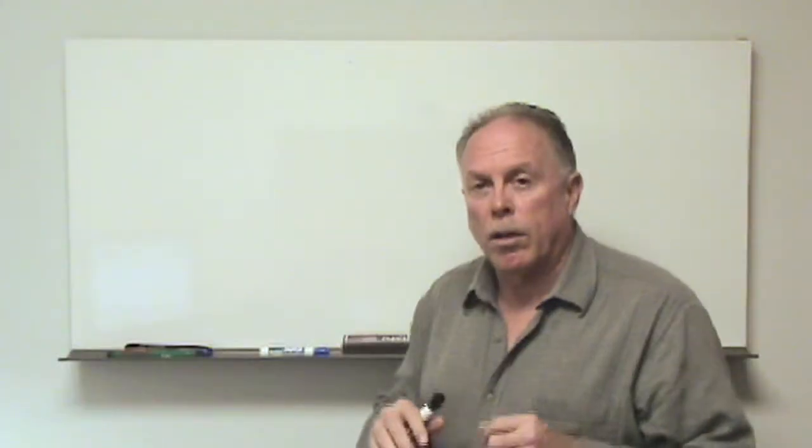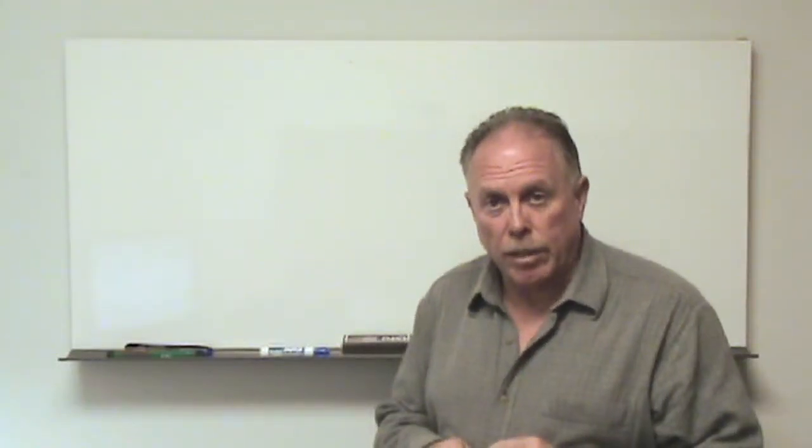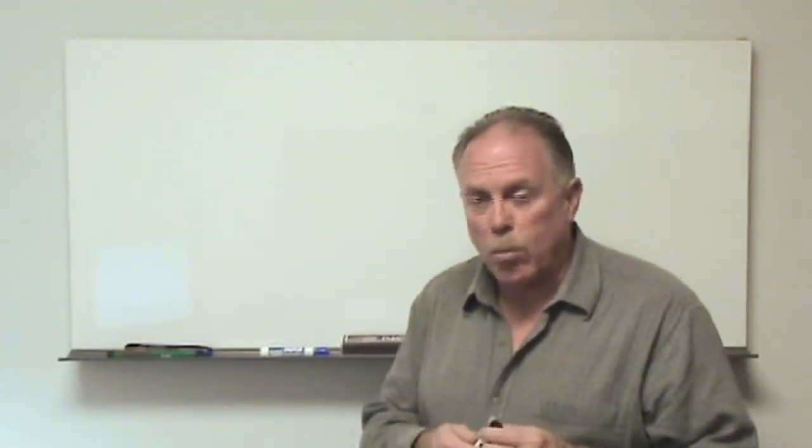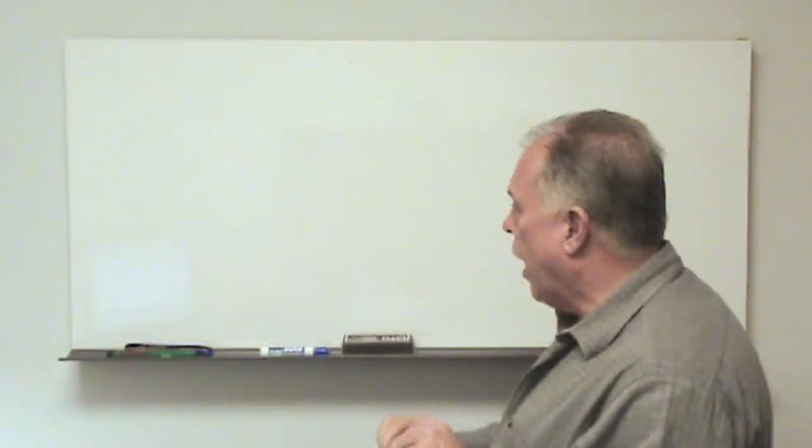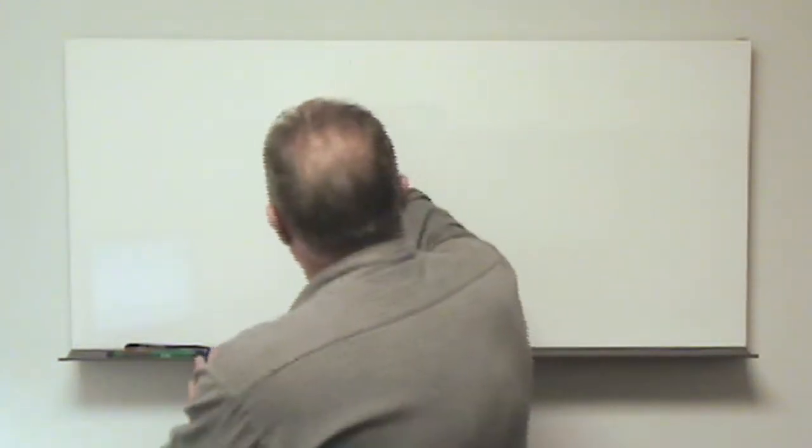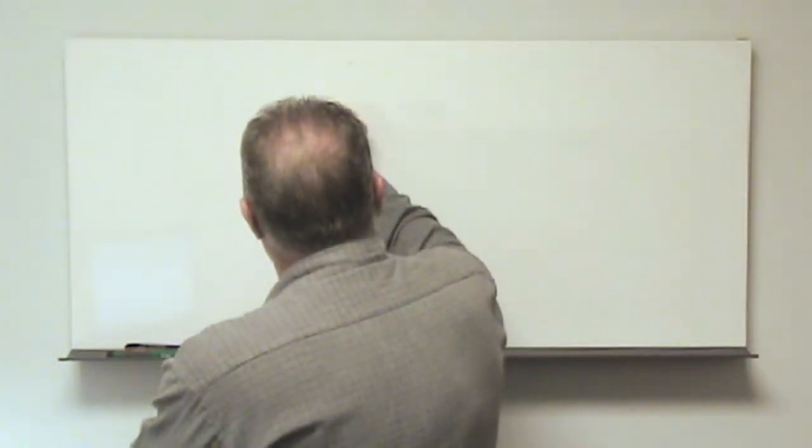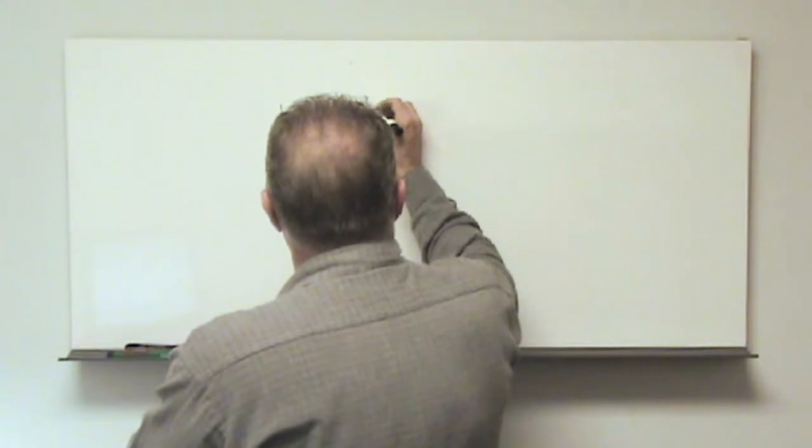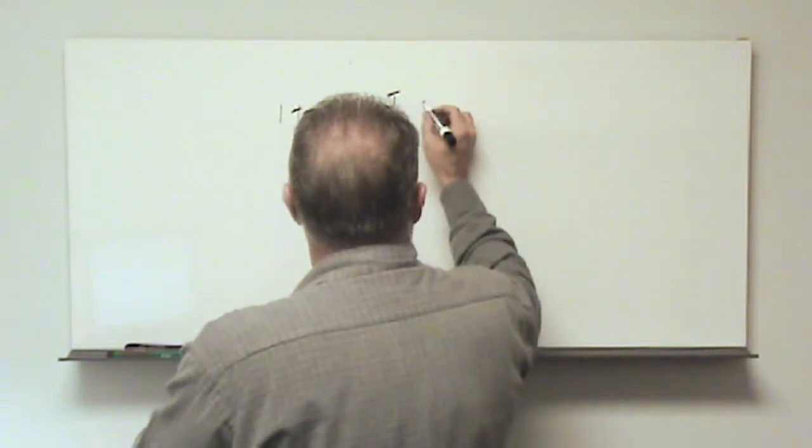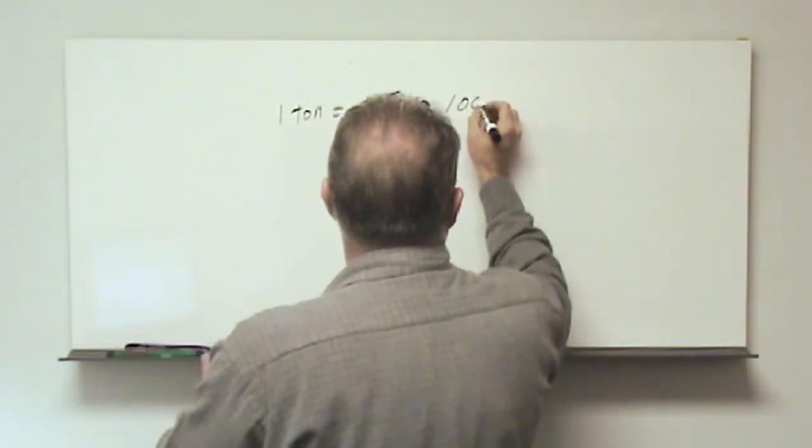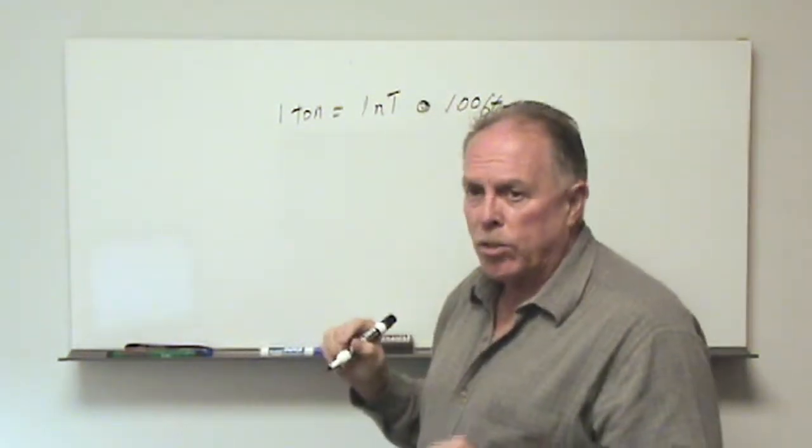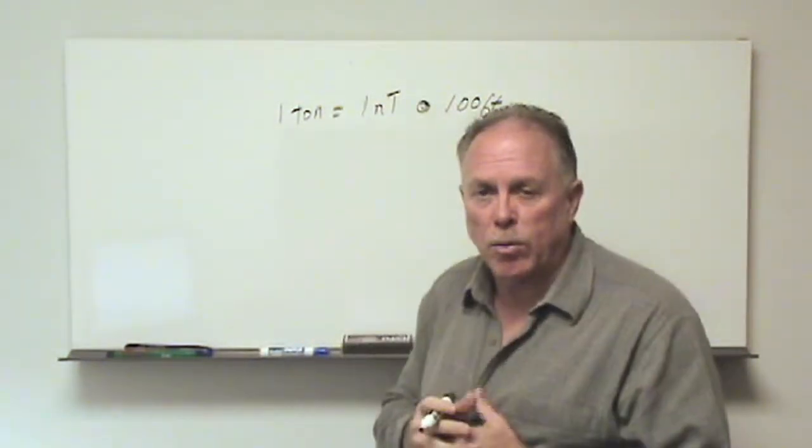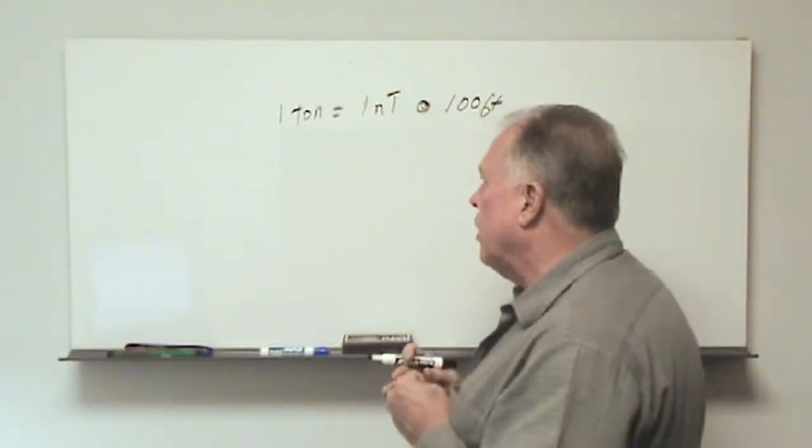I want to go over a couple of other points that need perhaps a little more explanation regarding the rules of thumb that I discussed in the past. The first one is that one ton of ferrous material equals one nanotesla at 100 feet. Now you'll remember that this is the induced formula to give us the size of anomalies that we get from various targets.